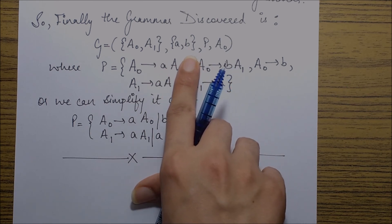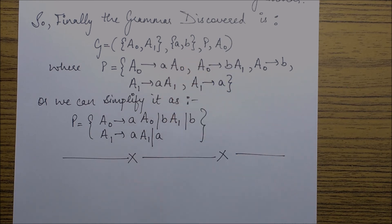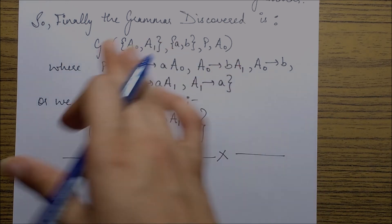And there are two terminals small a and small b, and A naught is the starting symbol. So this is how we've defined the grammar.